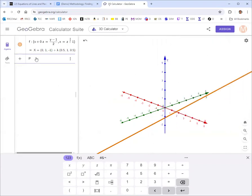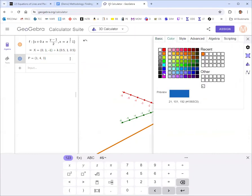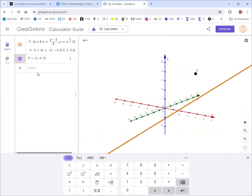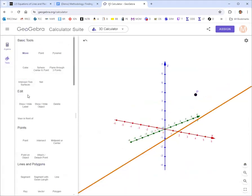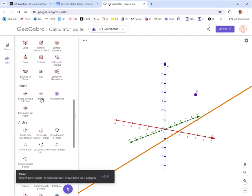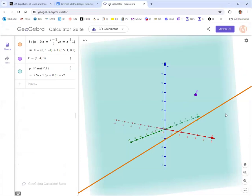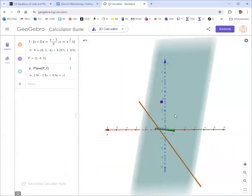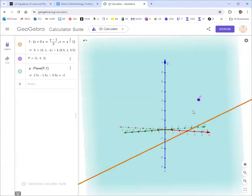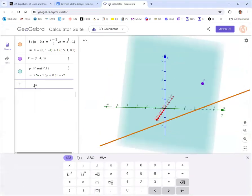So change the color. And then let's put in our point P. And then you can have GeoGebra draw the plane. Go to tools. And then you should see plane there. And it'll say select three points or a point in a line or two lines. So we have a point in a line. So we'd grab a point and the line. And it should draw the plane for us. And it gives us the equation there as well. And you can make sure that the point and the line are both on the plane.